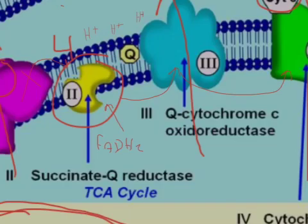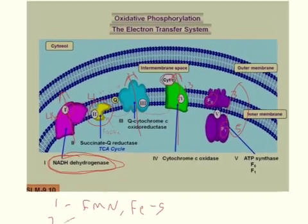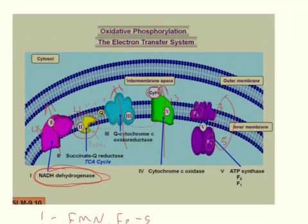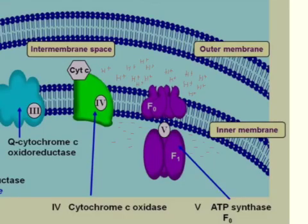So the electrons from FADH2 pump fewer protons than NADH. And so the pumping of protons to the inner membrane space creates the gradient that allows protons to flow through ATP synthase. And this movement through ATP synthase is called the proton motive force.